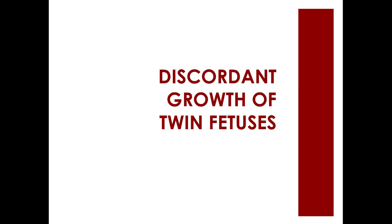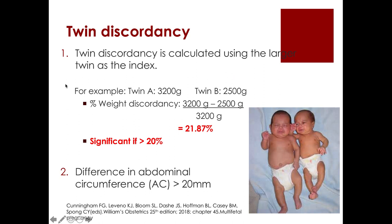Twin discordancy is calculated using the larger twin as the index. For example, if twin A weighs 3,200 grams and twin B weighs 2,500 grams, percent weight discordancy equals (3,200 minus 2,500) divided by 3,200, giving 21.87% — which is considered significant. Weight discordancy of more than 20% is significant. Alternatively, a difference in abdominal circumference of more than 20 millimeters between the twin pairs is also considered discordant twinning.